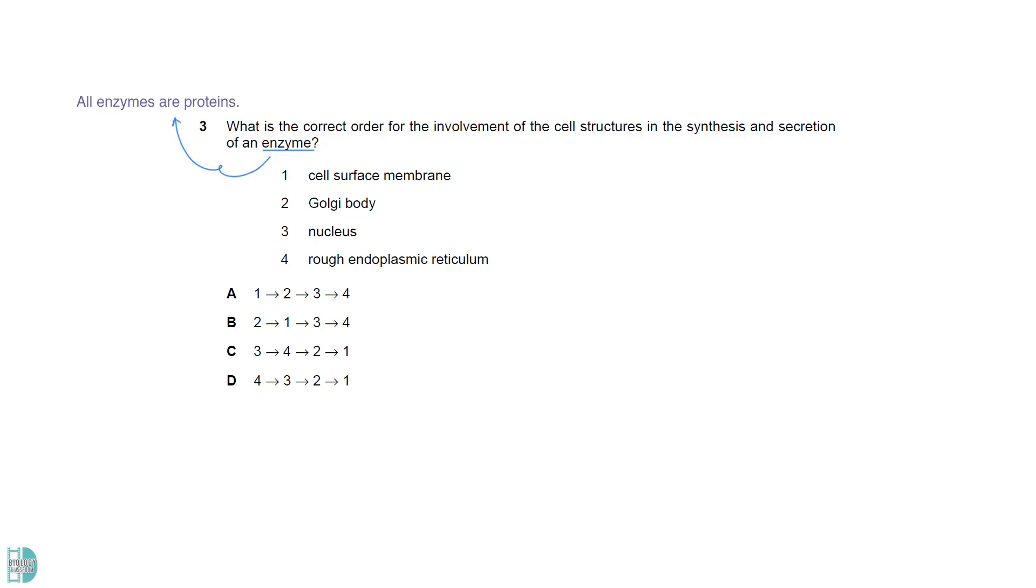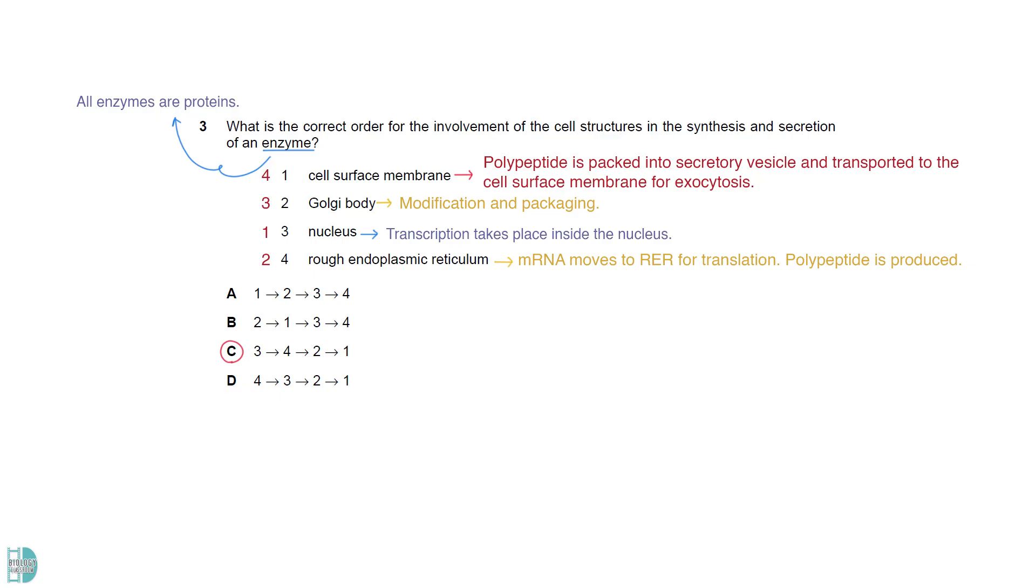All enzymes are proteins. To synthesize proteins, transcription has to take place inside the nucleus. Then, the mRNA will move to the RER where translation takes place to produce polypeptide. The polypeptide is then transported to the Golgi body for modification and packaging. It is packed into secretory vesicle and transported to the cell surface membrane for exocytosis.